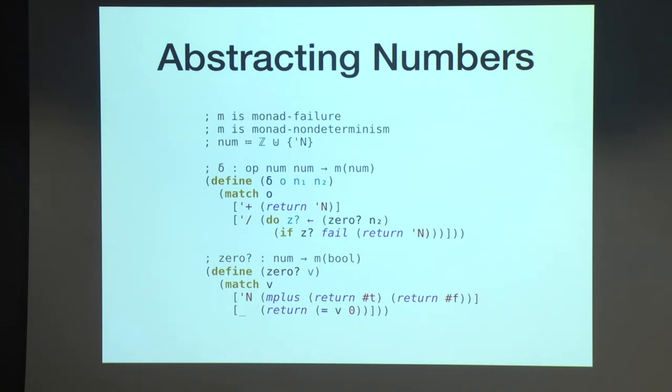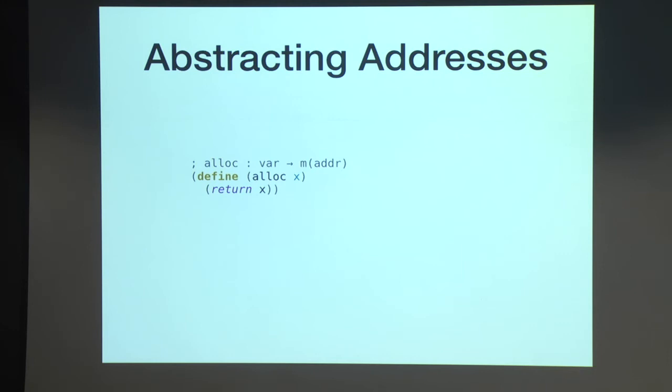So that's all there is to a simple abstraction for numbers. Now let's talk about abstracting addresses. So rather than using new fresh integers in our allocation procedure, let's do a very, very simple thing that has a finite set of options, which is let's just use variables themselves as addresses. So here alloc x is just returning the variable x. And what this means is when we extend our store to map an address a to a value v, we can't overwrite that value. That would be unsound. We now need to join that value, as this is the set of possible values that could appear at this address. So here I'm getting the store from the monadic state, and I'm updating it, taking the union of that and a singleton map from a to the singleton set v.